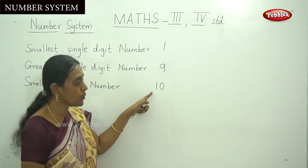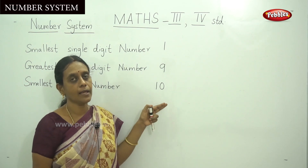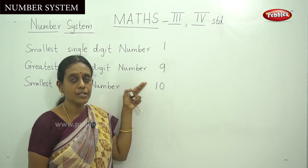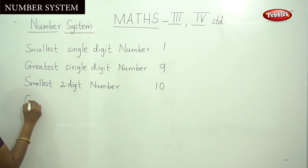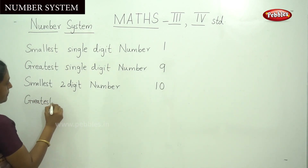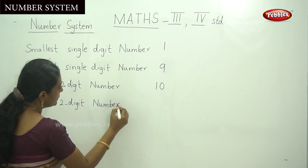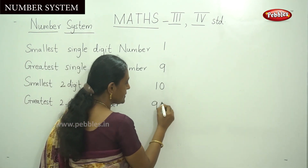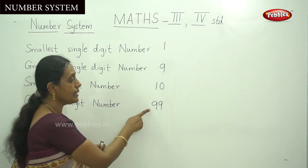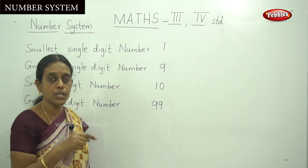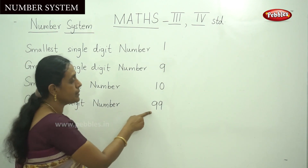Similarly, following 10 to 20, 30, 40, 50, 60, 70, 80, 90, 91, 92, 93 like that — the greatest 2-digit number is 99. Because 99 is followed by which number? That is 100. So 100 is a 3-digit number, and this makes 99 the greatest 2-digit number.